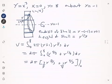As y goes from zero to eight, we plug in eight everywhere we see y and get a final answer of 936π divided by seven.